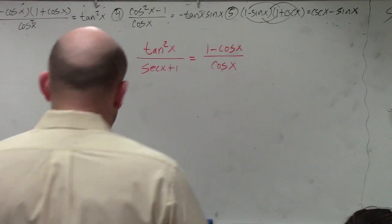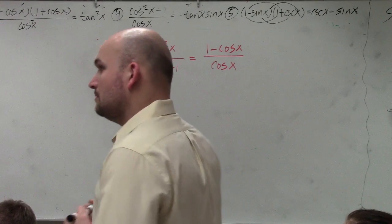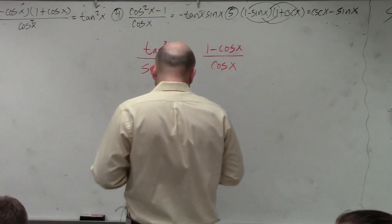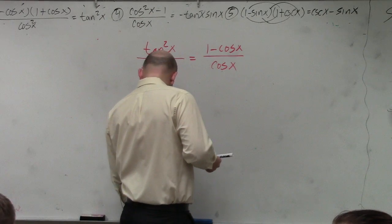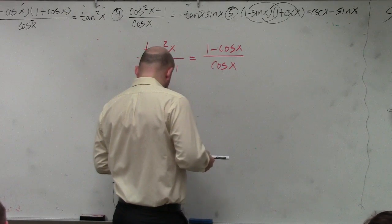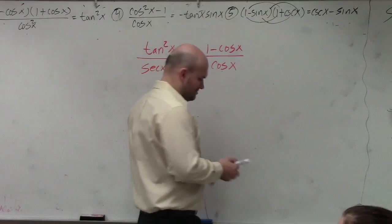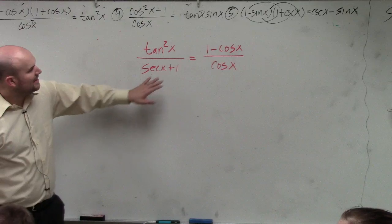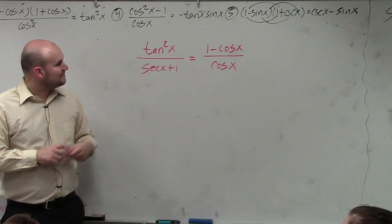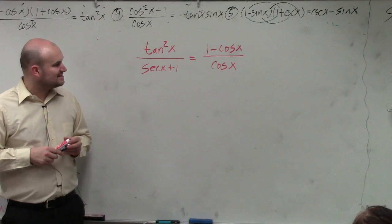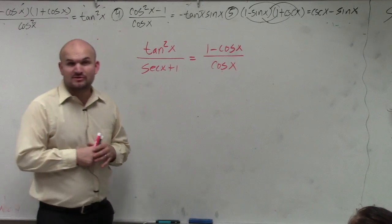First of all, why do you have this going on? I don't know. Alright, if you guys, I turned the ringer off. So if you guys have tangent squared of x divided by secant of x plus 1 equals 1 minus cosine of x divided by cosine.